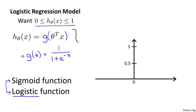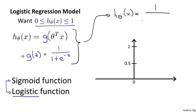If we take these two equations and put them together, here's an alternative way of writing out the form of my hypothesis. h of x is 1 over 1 plus e to the negative theta transpose x. All I've done is taken the variable z and plugged in theta transpose x, so I end up with theta transpose x in place of z.